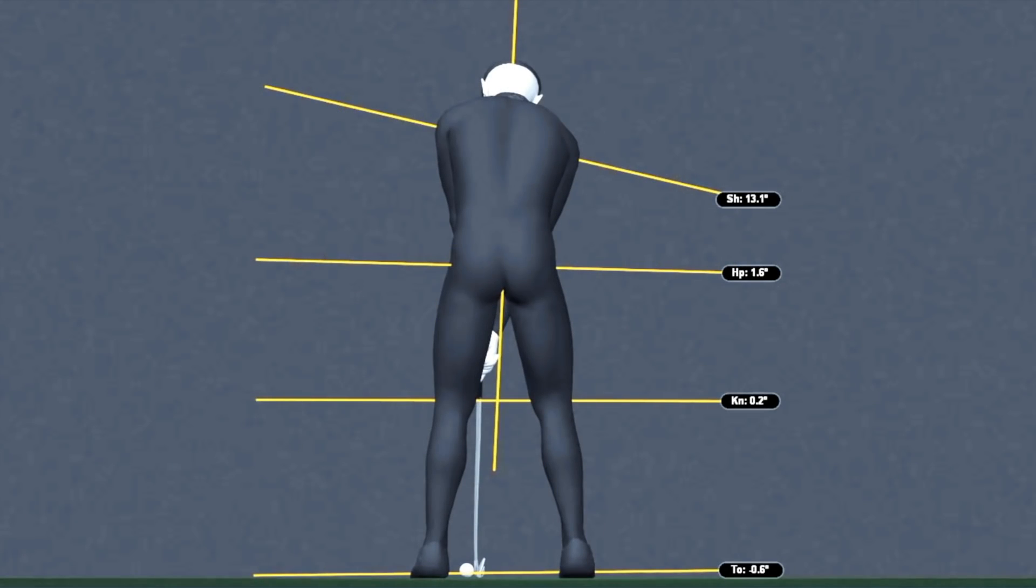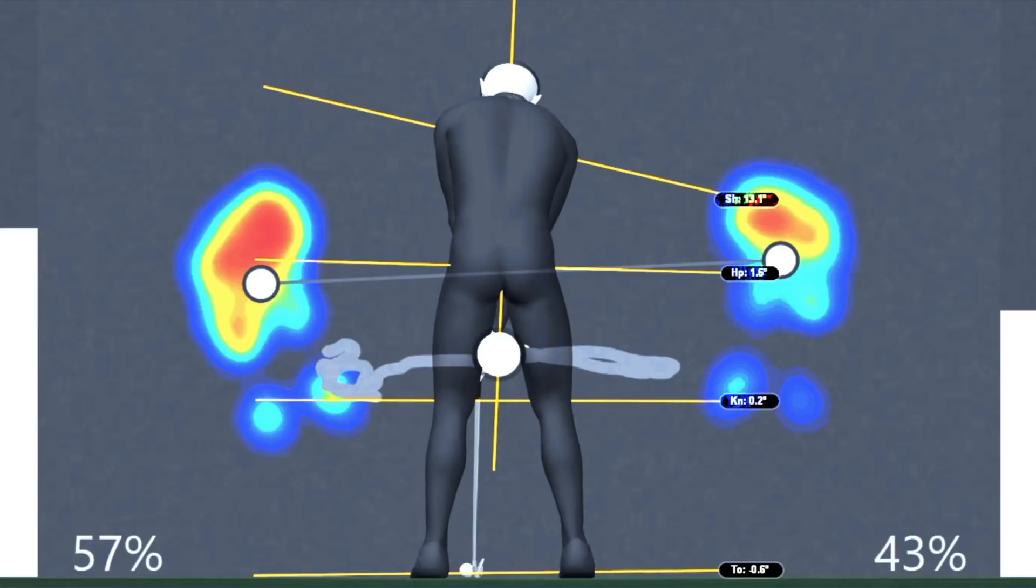So here's our same golfer, same exact swing that we used in part one, only in this video we're going to go one step deeper and overlay his pressure information. So what you're looking at is his right foot over on his right side and his left foot on his left side.